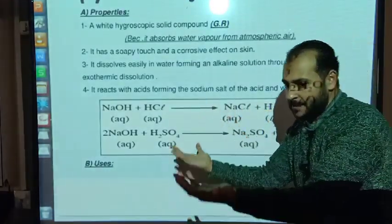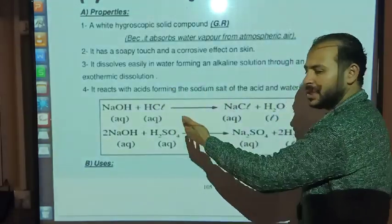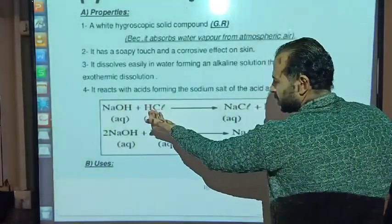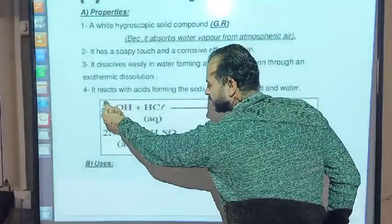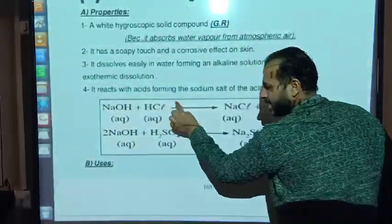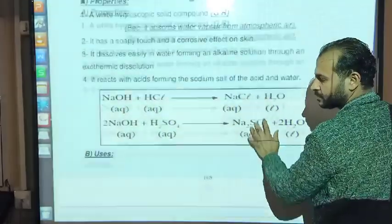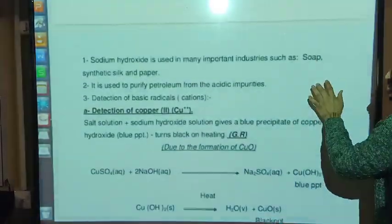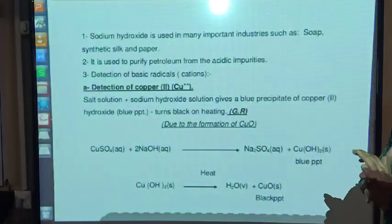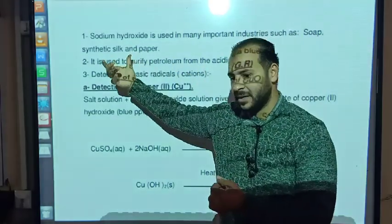Sodium hydroxide is a base or alkali; it reacts with acids in a neutralization reaction forming salt and water. For example: NaOH + HCl → NaCl + H₂O. The Na⁺ combines with Cl⁻ to form NaCl, and H⁺ combines with OH⁻ to form water.